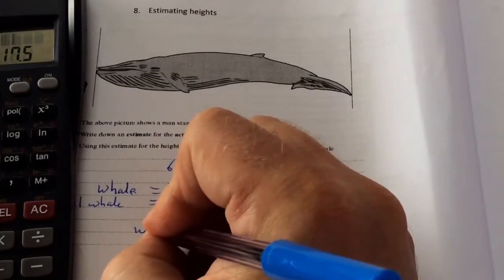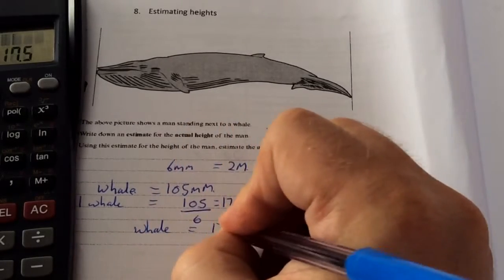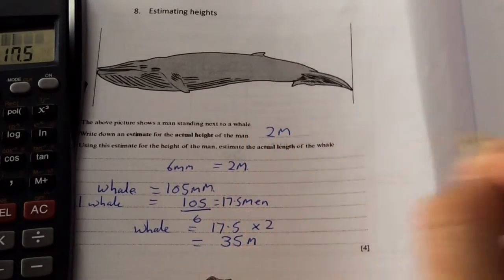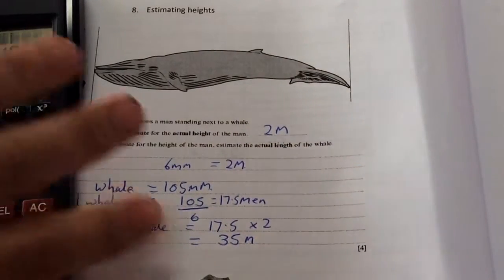Then that means the whale is going to be 17.5 multiplied by 2, which is 35 metres long in total. So remember that's an estimate.